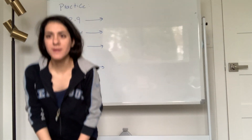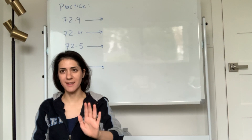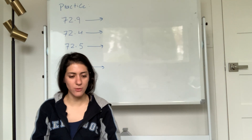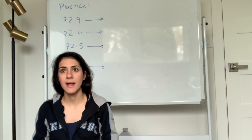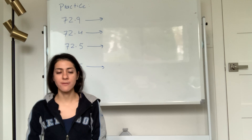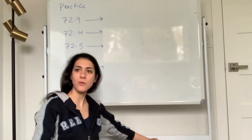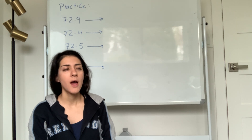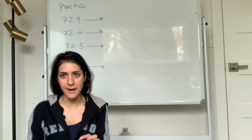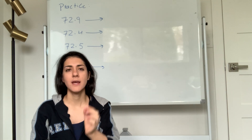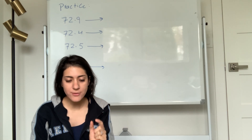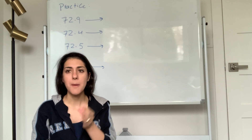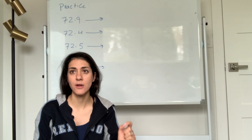All right class, welcome back to the second lecture. Last time we talked about significant figures and significant figures in calculations, and we did a bunch of practice problems. I gave you a take-home problem to do, and now I want to finish that up. But before we go over those practice problems, I want to go over rounding one more time. You're going to do the calculation, get a number, see how many sig figs you're supposed to have, and round based on that.